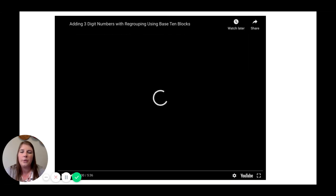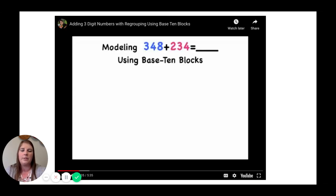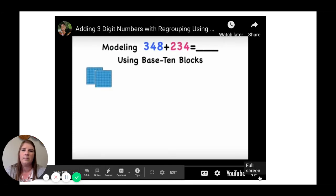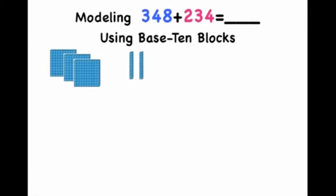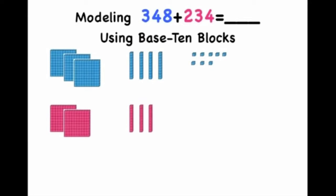To review base 10 blocks, we're going to watch two short videos. 348 has three hundreds, four tens, and eight ones. Now let's build 234 using our base 10 blocks. 234 has two hundreds, three tens, and four ones.